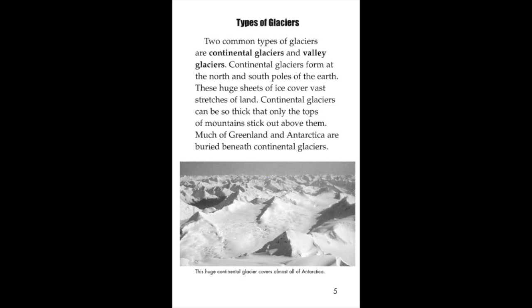Types of glaciers. Two common types of glaciers are continental glaciers and valley glaciers. Continental glaciers form at the north and south poles of the earth. These huge sheets of ice cover vast stretches of land. Continental glaciers can be so thick that only the tops of the mountains stick out above them. Much of Greenland and Antarctica are buried beneath continental glaciers.